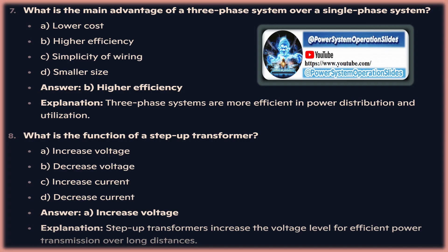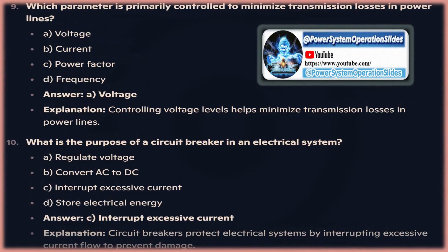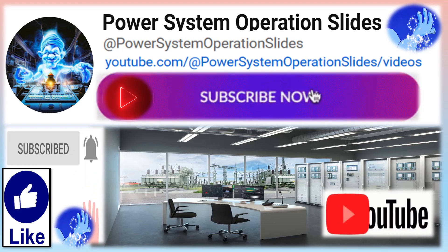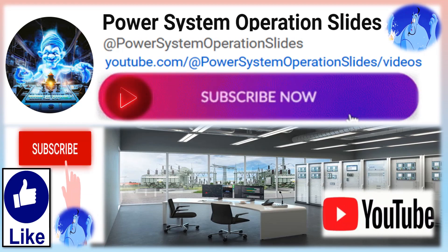Tertiary control: after secondary control is completed, the reserve margin used for this control shall be restored too, and this is the purpose of the tertiary control or replacement reserve — the last level of frequency control. In order to perform this restoring, the TSO calls single producers, even the ones not involved in the secondary control, the operating prescriptions related to power variation for the generators already in operation and if needed asking startup of generators not operating at that moment. This control level is not automatic, but it's executed upon request from the grid operator, and its remuneration follows the same rules of the secondary control.